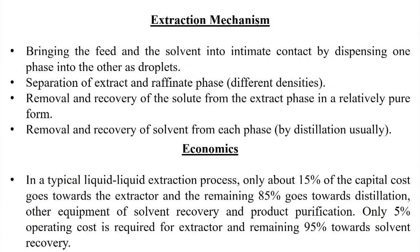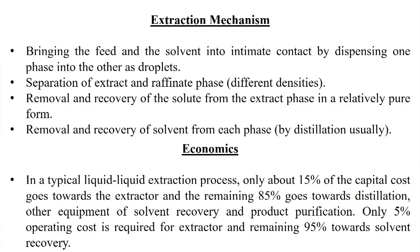The extraction mechanism involves three steps. First, bring the feed and extracting solvent into intimate contact by dispersing one phase into the other as droplets. The feed with the solute and carrier solvent is mixed with the extracting solvent and dispersed as droplets. Depending on the miscibility of the solute in the extracting solvent, the solute moves from the carrier solvent to the extracting solvent. The second step is separation of the extract and raffinate phases, dependent on the density difference between the two solvents.